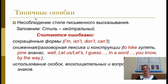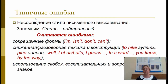Типичными ошибками являются также несоблюдение стиля письменного высказывания. Стиль эссе «Моё мнение» — нейтральный, поэтому ошибками считаются сокращённые формы: «I'm» (утвердительное предложение), «isn't»/«don't» (отрицательное), «can't» (модальный глагол) — это три разные ошибки. Ошибками считаются также сниженная разговорная лексика и конструкции различного характера, а также использование скобок, восклицательных и вопросительных знаков.